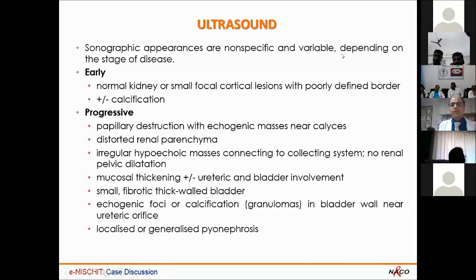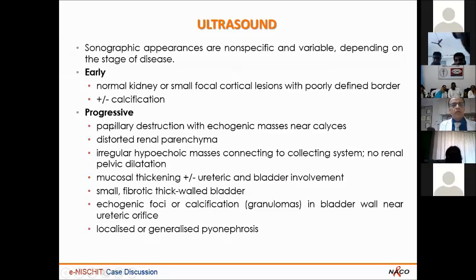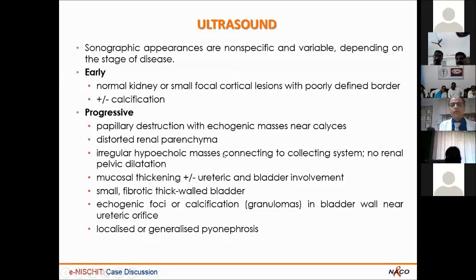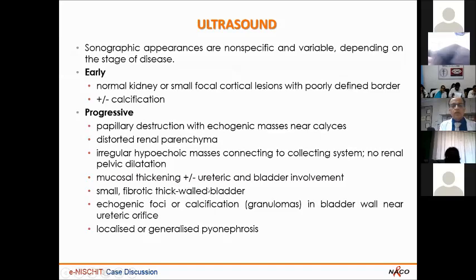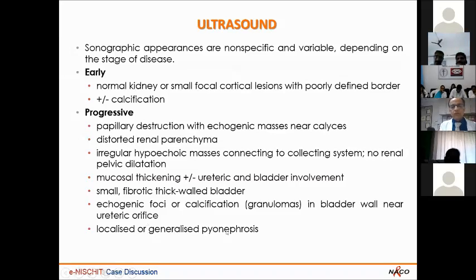Sonographic appearances are non-specific and variable depending on the stage. In early stage, there is a normal kidney or focal cortical lesions with poorly defined borders. In progressive stages, there is papillary destruction with echogenic masses near calices, distorted renal parenchyma, irregular hypoechoic masses connecting to the collecting system, mucosal thickening, small fibrotic thick-walled bladder, and echogenic foci or calcification near the ureteric orifice. It is a very good initial screening modality.